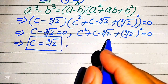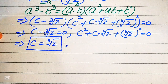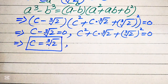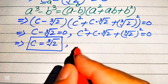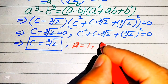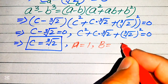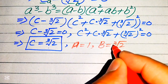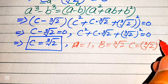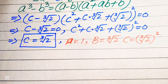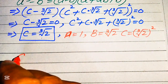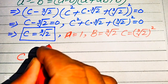To find the other solutions we focus on the second equation, which is a quadratic equation in c. We apply the quadratic formula. The coefficients are: capital A equals 1, capital B equals cube root of 2, and capital C equals (cube root of 2) squared.